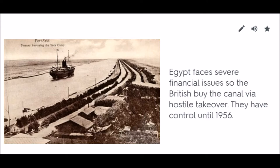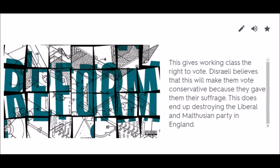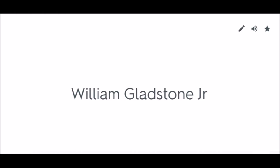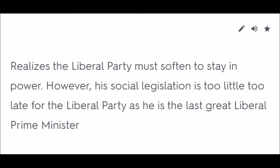Reform Bill of 1867: This gives the working class the right to vote. Disraeli believes that this will make them vote conservative because he gave them their suffrage. This does end up destroying the Liberal and Malthusian party in England. William Gladstone: Realizes the Liberal Party must soften to stay in power. However, his social legislation is too little too late for the Liberal Party, as he is the last great Liberal Prime Minister.